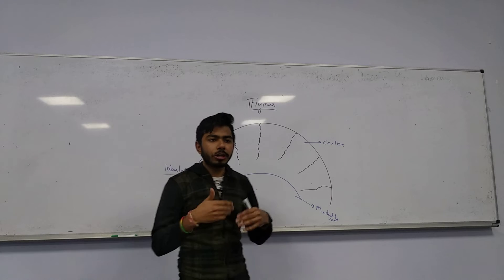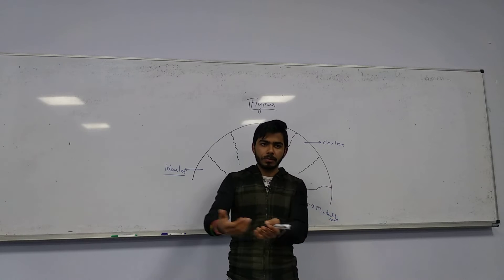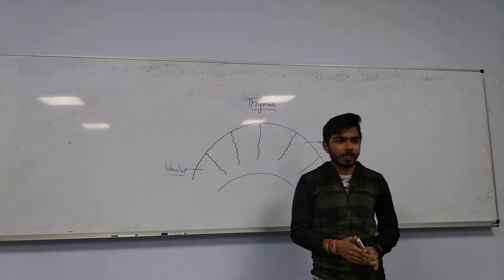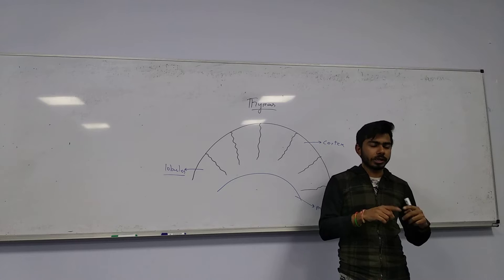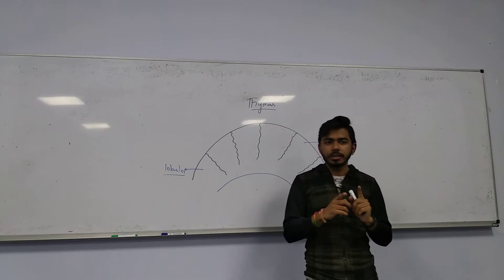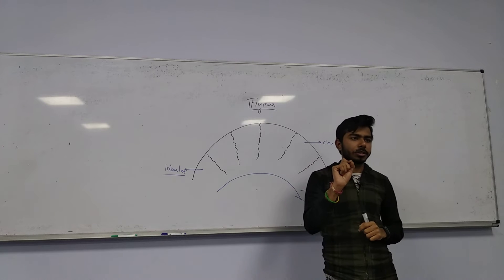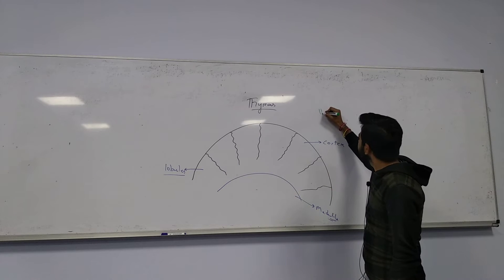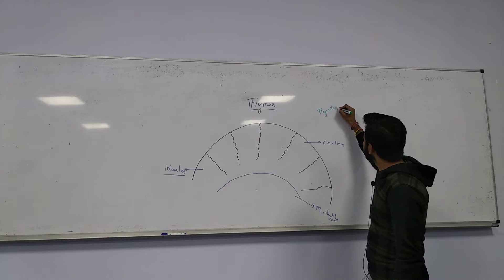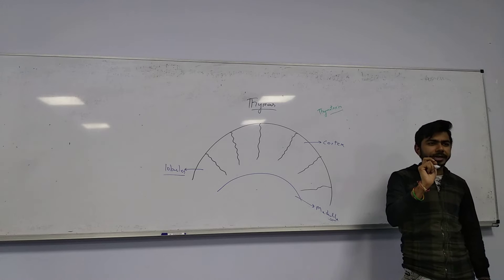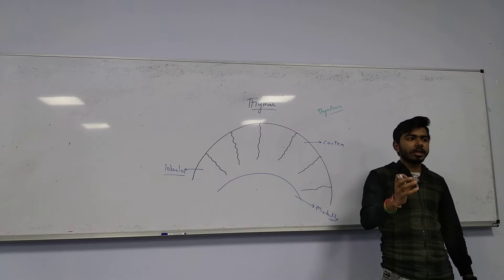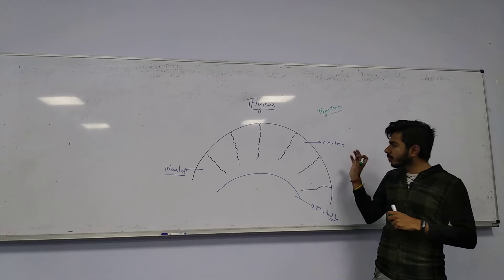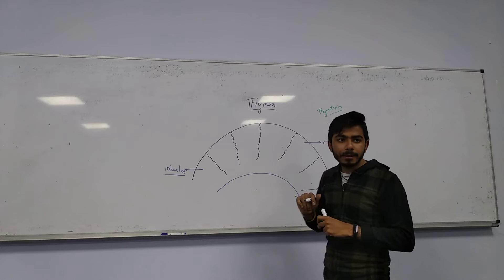When immature T lymphocytes come out from the bone marrow into peripheral blood circulation, how do they know to go to the thymus? The thymus releases a special kind of chemoattractant called thymotaxin. This chemoattractant attracts the immature T lymphocytes towards the thymus, where they enter the cortex first.